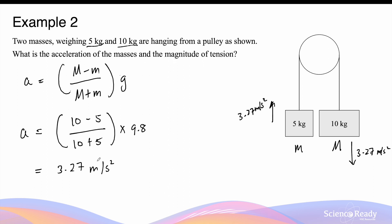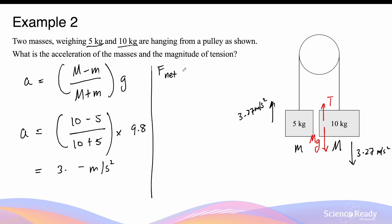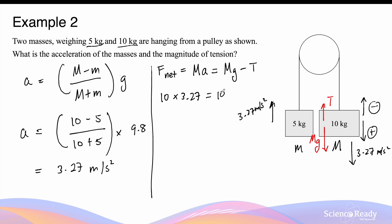What about the tension? Now that we have found the acceleration, we can use this value in the force equations for either mass to find the tension. The 10 kg mass experiences a downward weight force equal to Mg and an upward tension force. By Newton's second law, the net force equals mass times acceleration: M × a = Mg − T. So tension T = 10 × 9.8 − 10 × 3.27, which equals 65.3 newtons.